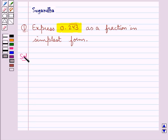We are given the repeating decimal 0.243 bar. Since the bar is above the block of digits 243, this means that this block of digits is repeating. We need to express this repeating decimal as a fraction.